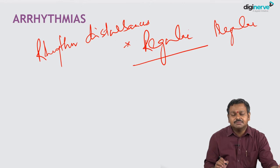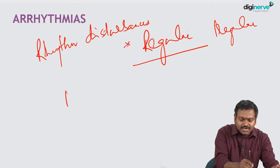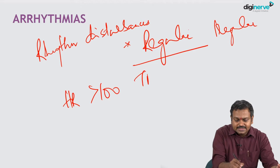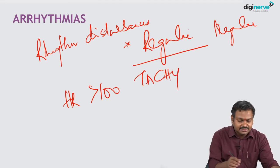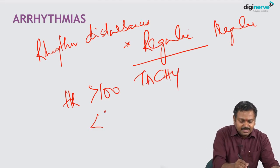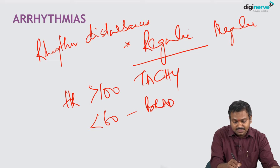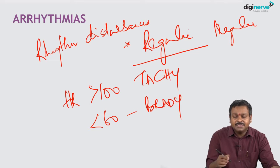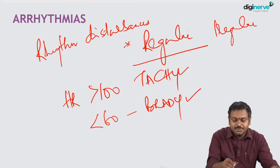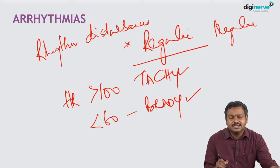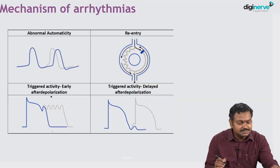The basic classification of arrhythmias is based on heart rate. When the heart rate is more than 100, we call it tachyarrhythmia — tachy standing for increased heart rate. When the heart rate is less than 60 but the rhythm is abnormal, we call it bradyarrhythmia. Both tachyarrhythmias and bradyarrhythmias are dangerous.